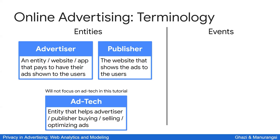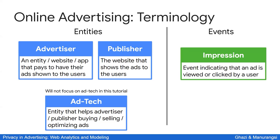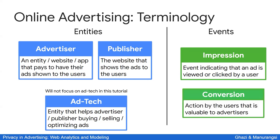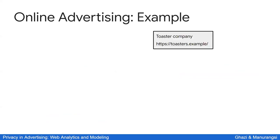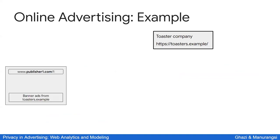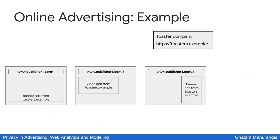There are two types of events we'll be interested in. An impression is an event where a user interacts with an ad — this could be a view or click event. A conversion is an action that the advertiser considers valuable, such as a purchase, installing an app, or interacting with an app in a certain way. As a basic example, say you own a toaster company at toaster.example, and you pay publisher1.com to show banner ads and video ads.